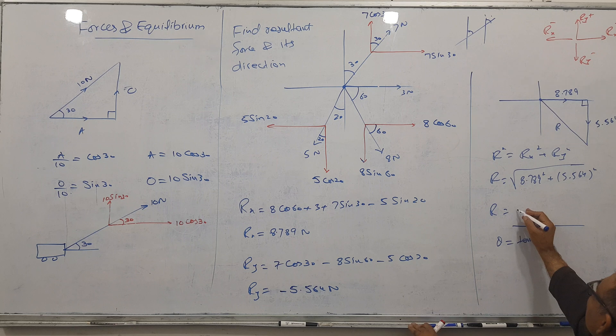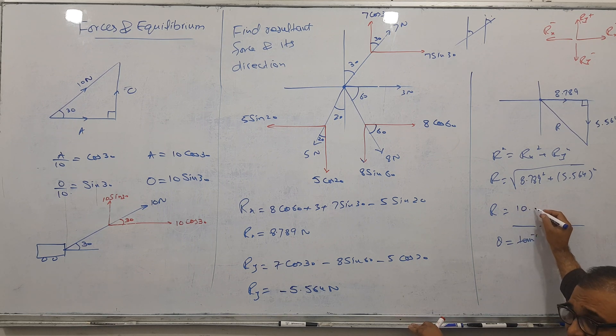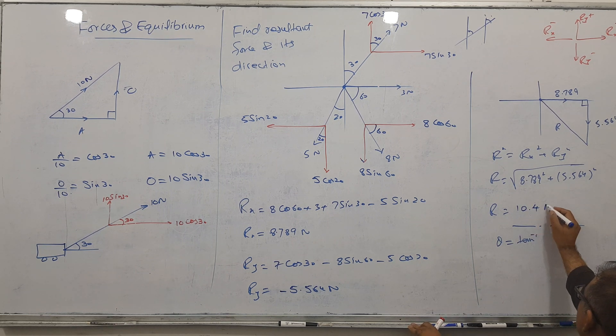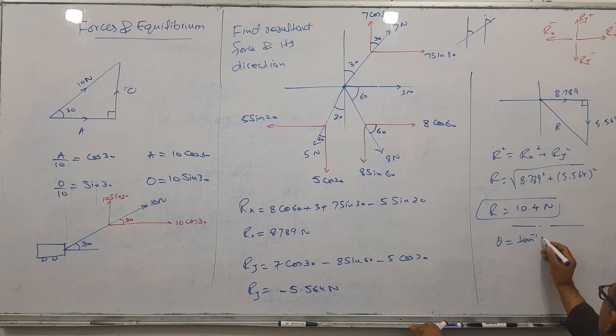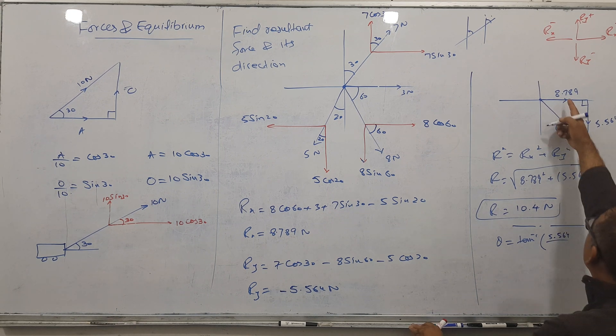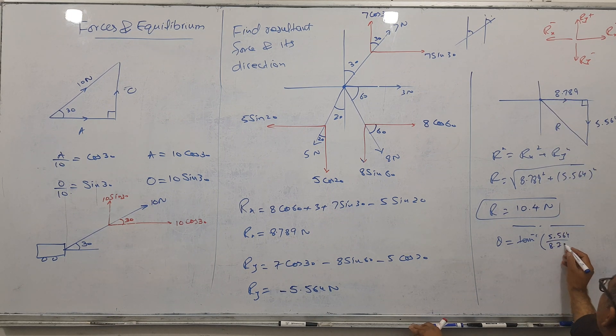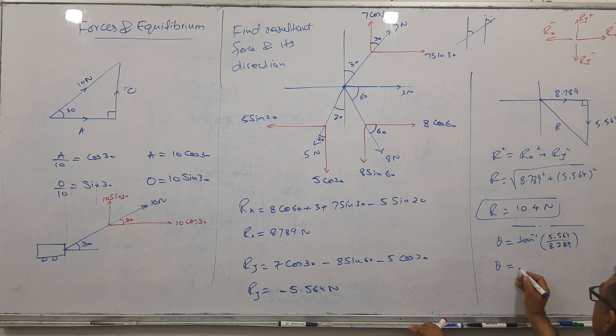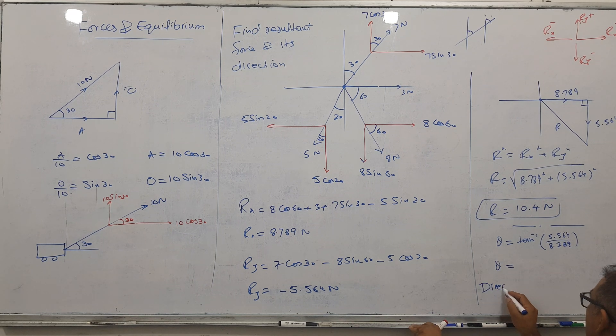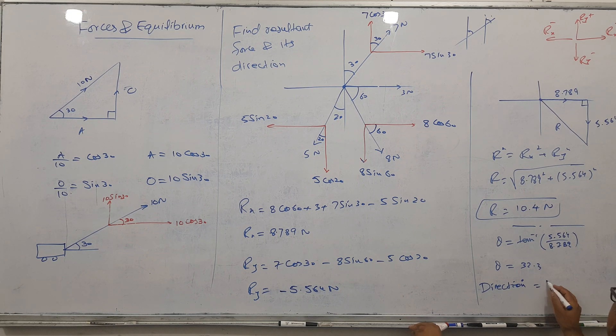10.4 Newtons, this is the resultant force. Please give me tan inverse, so 5.564 divided by adjacent. Give me the angle. 32.3 degrees. Give me one favor: 360 minus 32.3.